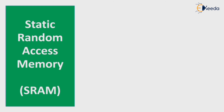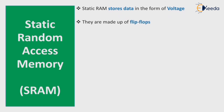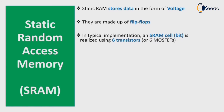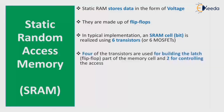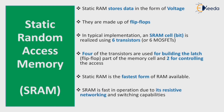Static Random Access Memory, or SRAM, stores data in the form of voltage. SRAM cells are made up of flip-flops. In a typical implementation, an SRAM cell is realized using six transistors or six MOSFETs — four are used for building the latch (the flip-flop), and two for controlling the access. Static RAM is the fastest form of RAM, due to its resistive network and switching capabilities.